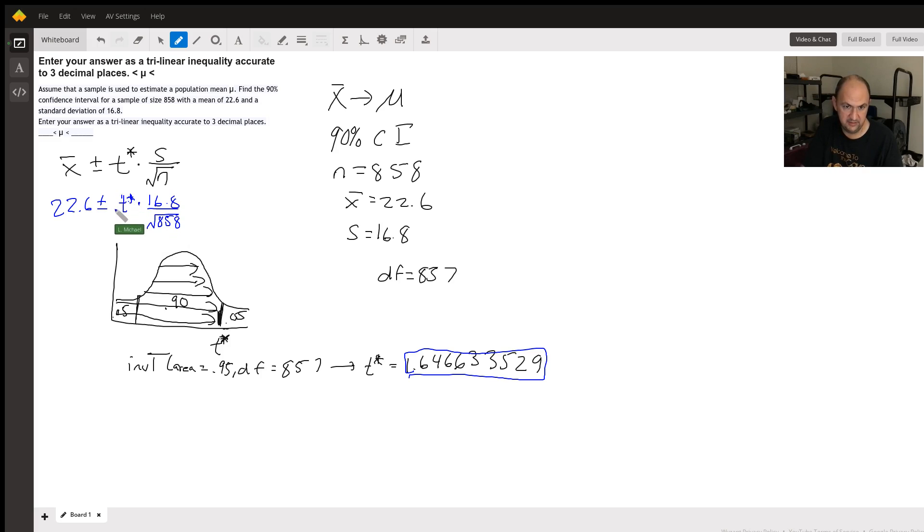Let's calculate this number. What I'm circling is called the margin of error. If I take 1.646633529 and multiply it by 16.8 over the square root of 858, the margin of error becomes 0.9444143821. So this becomes 22.6 plus or minus 0.9444.